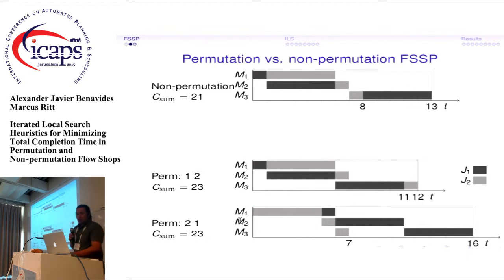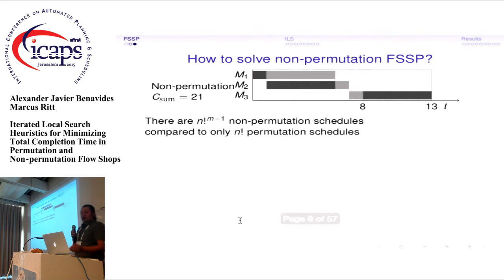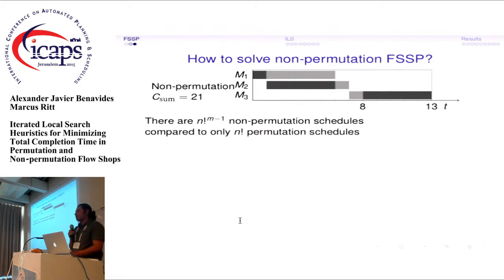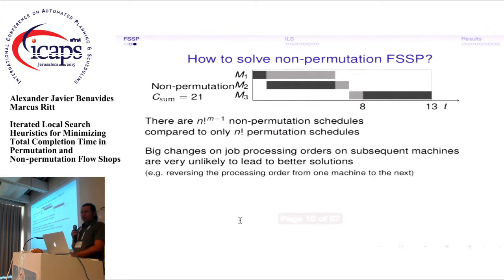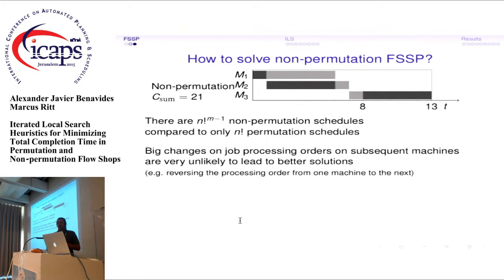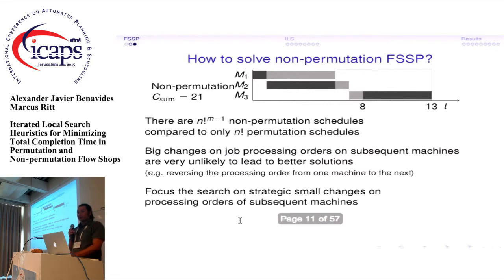If non-permutation schedules are better, why aren't researchers using them? There are n-factorial to the power of m non-permutation schedules compared to only n-factorial permutation schedules — a very large difference in search spaces. That's why researchers focus on permutation schedules. However, we realized that not the whole non-permutation search space is useful, so we focus on strategic small changes in the processing order of subsequent machines.